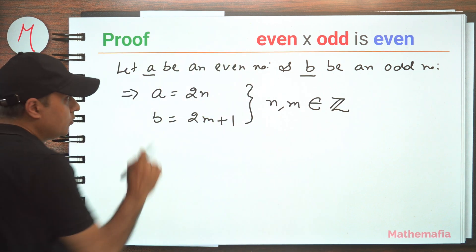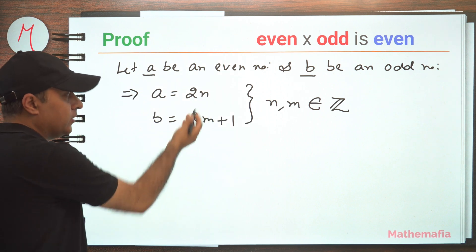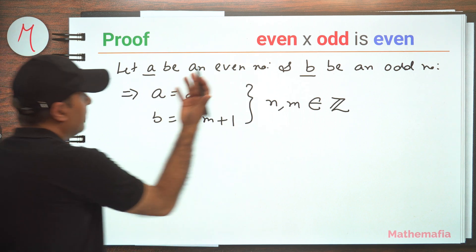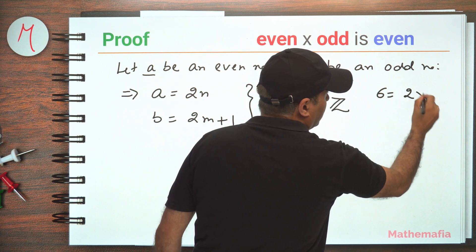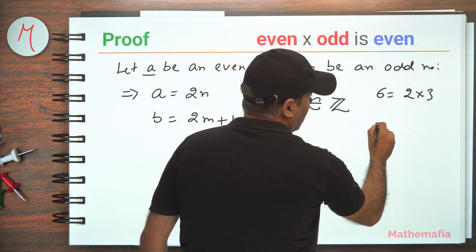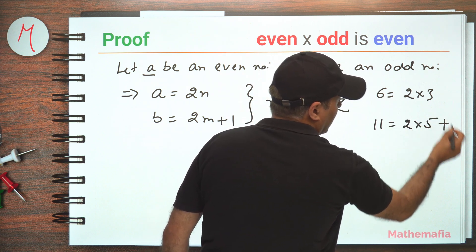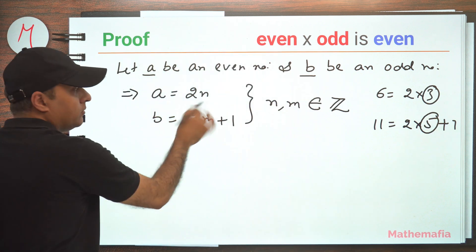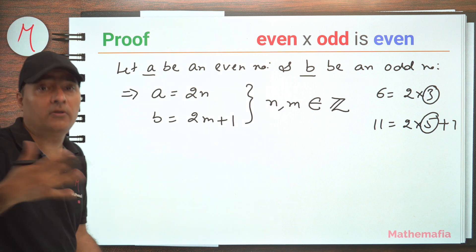Let me tell you once again, don't get confused why I used n over here and m over here. Their values can be same, but these can be two different numbers as well. For example, if a is 6, then it is 2 into 3, and if I take the odd number as 11, then it is 2 into 5 plus 1. So this number is different, this number is different. That's why we generally write n over here and m over here, because these two can be two different numbers.